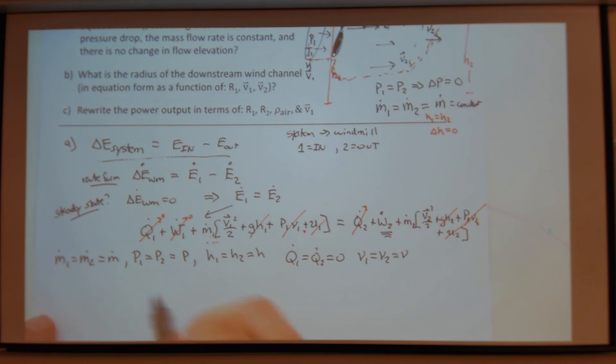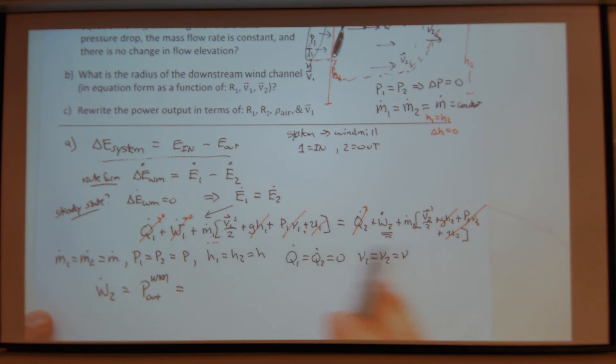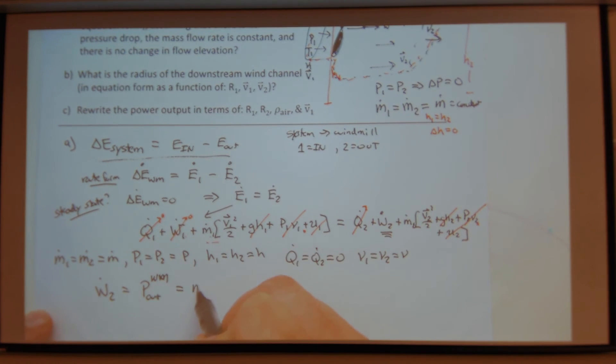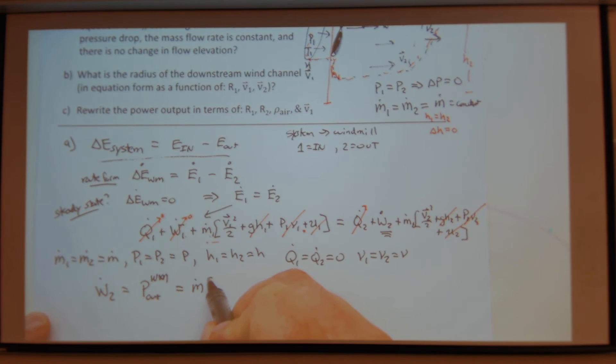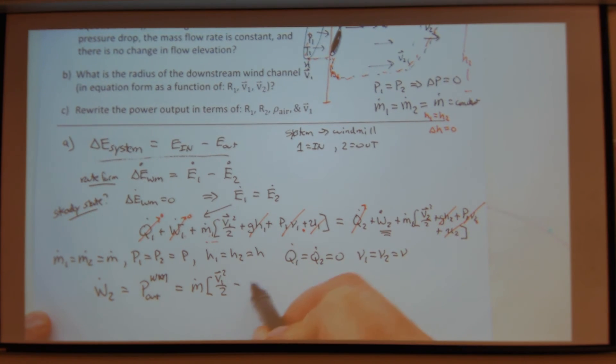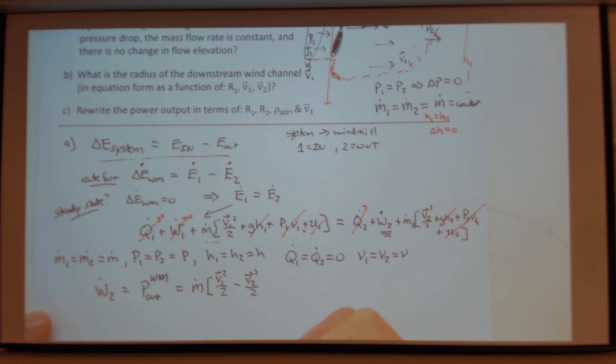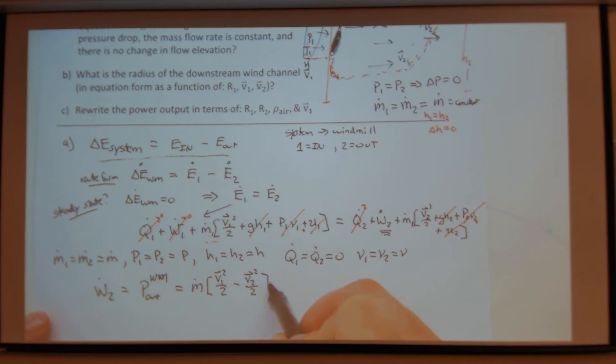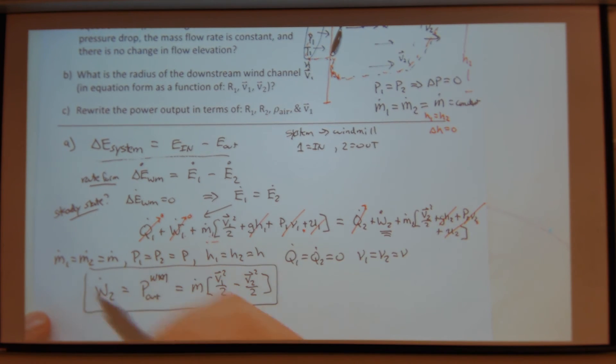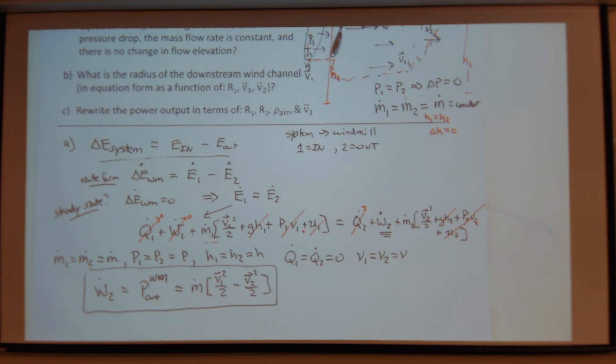And then just write out the full thing. Work dot two, which equals power out windmill. And then if I write all this stuff, so I have M dot V1 squared over 2 minus V2 squared over 2. That's the equation form. Yes?